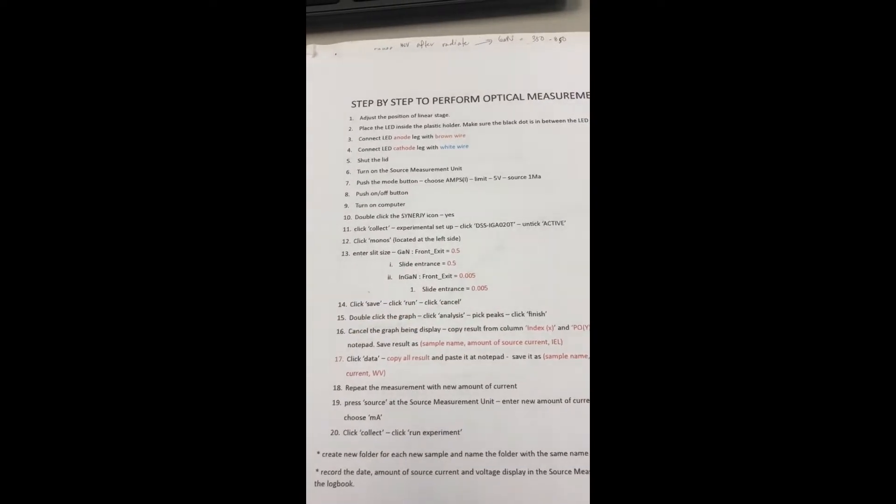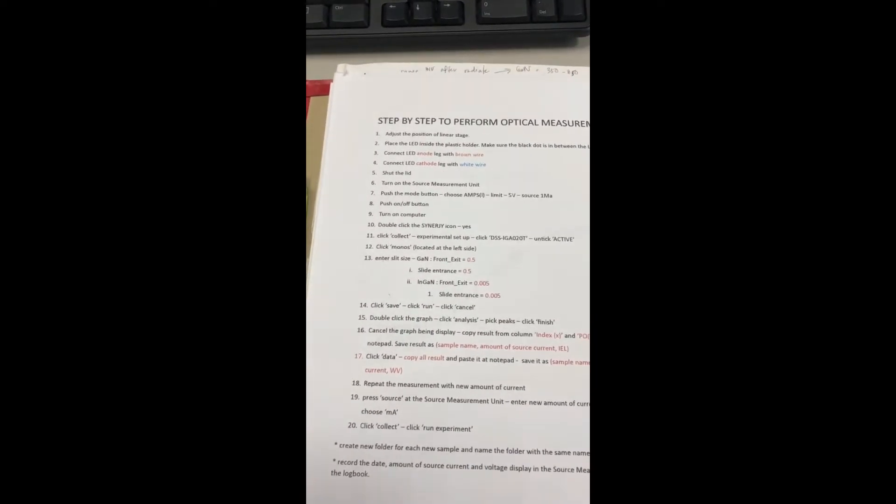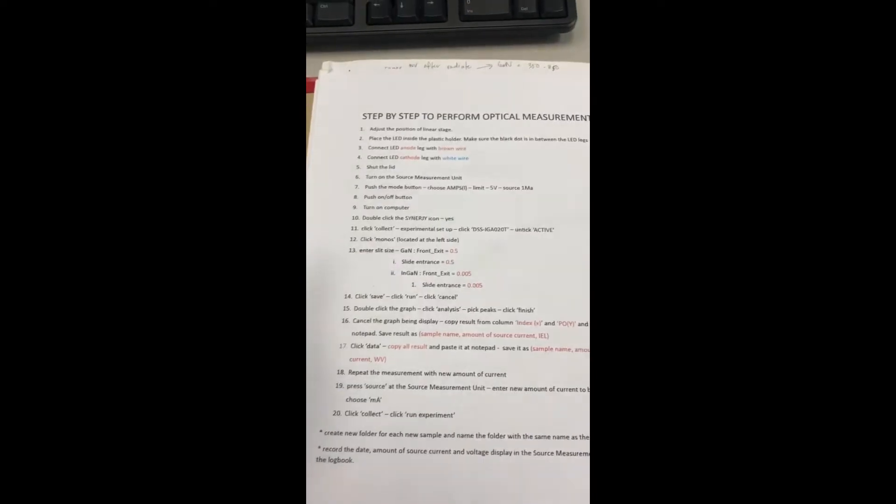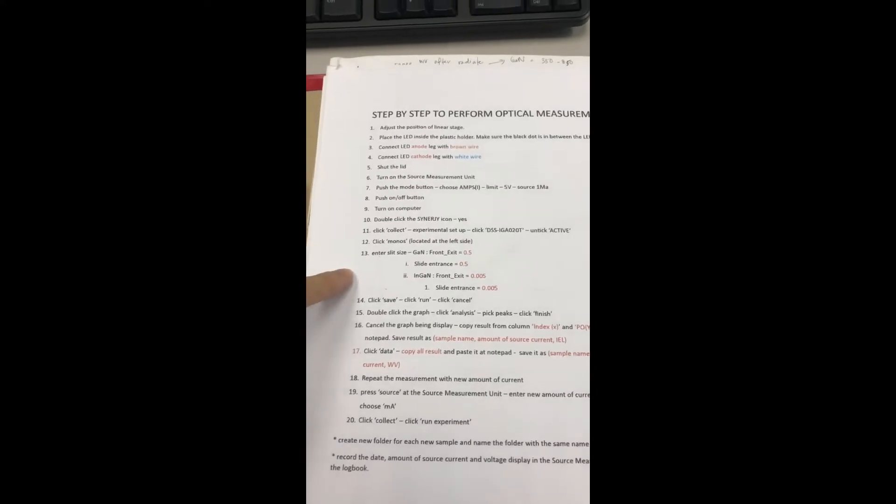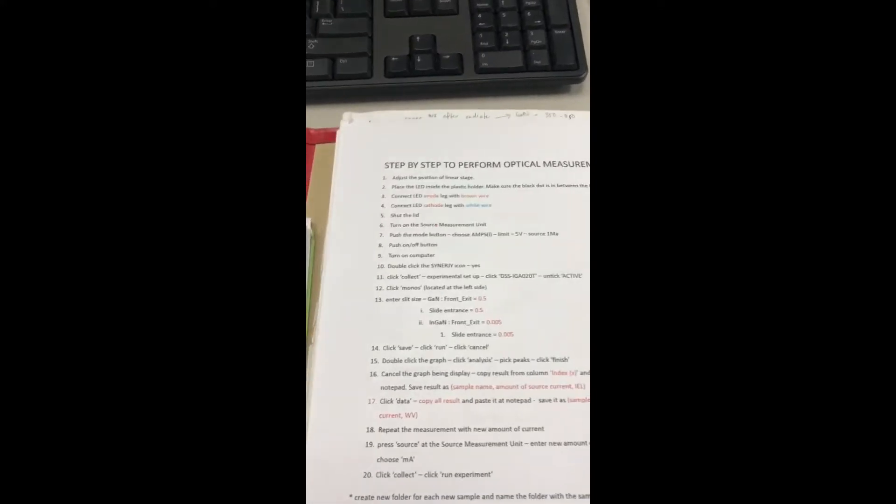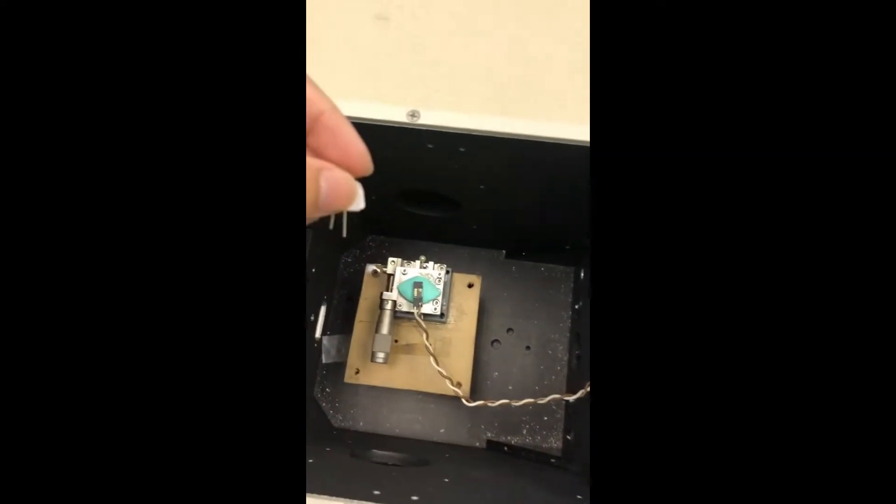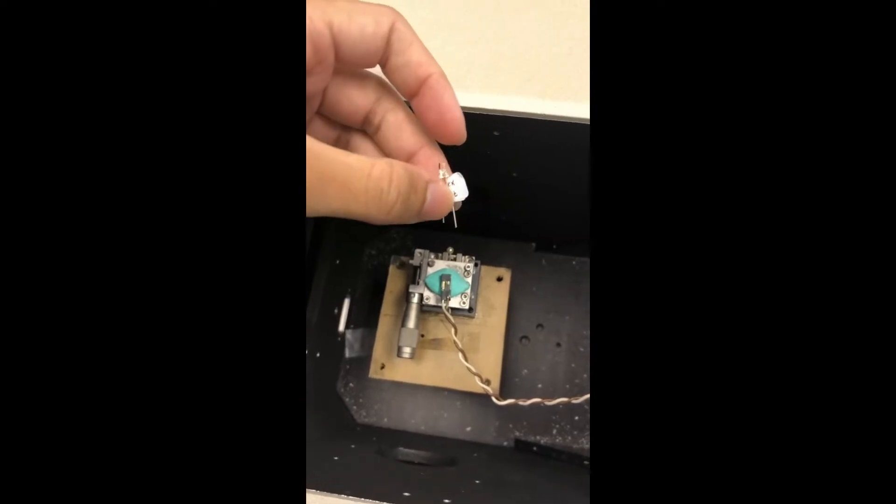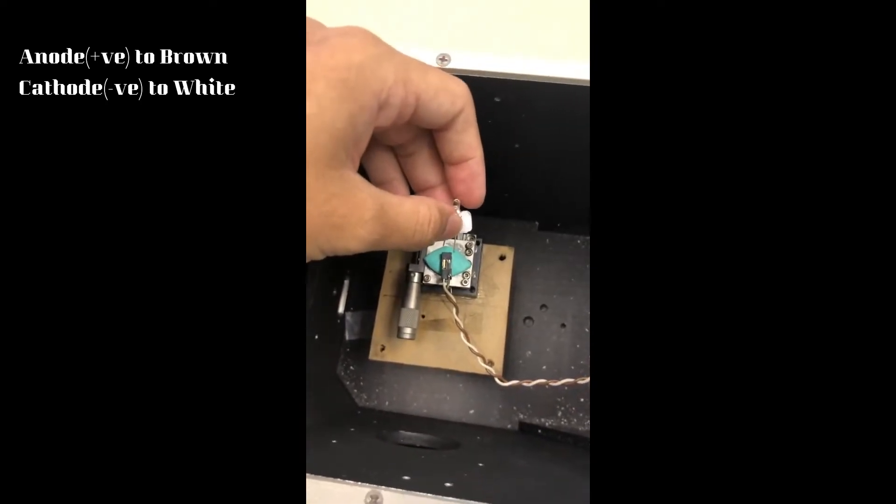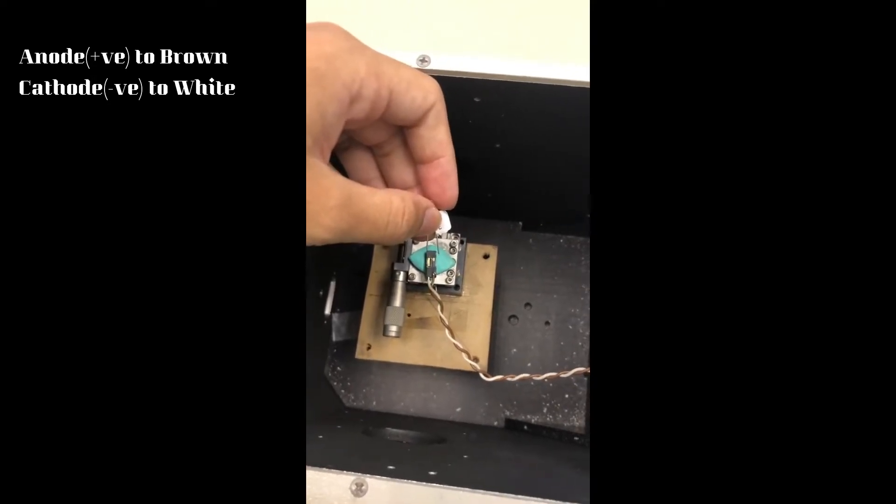Now I will show you how to set up an LED inside the Horiba machine after you have followed all these steps to set up the computer. So this is how the Horiba machine inside looks like. We need to connect the anode to brown wires and the cathode to the white colors.